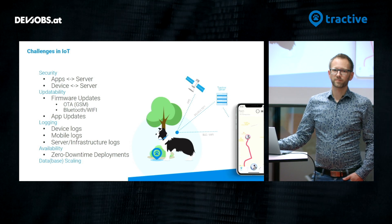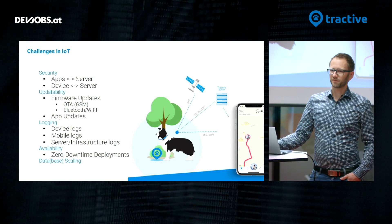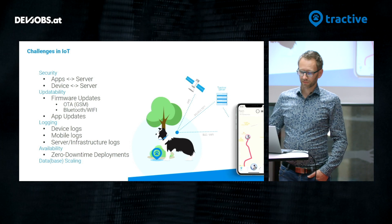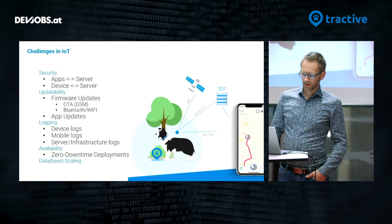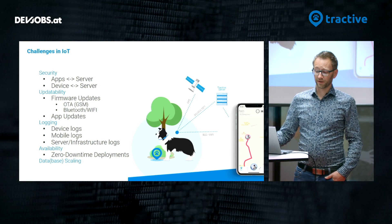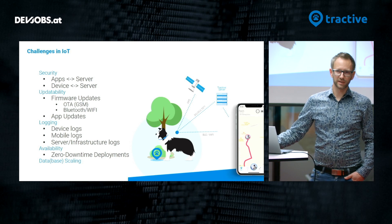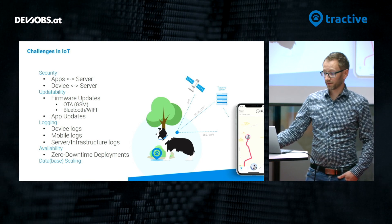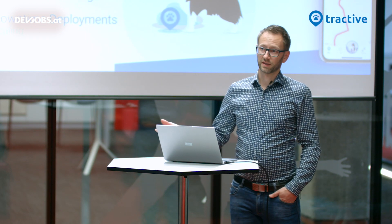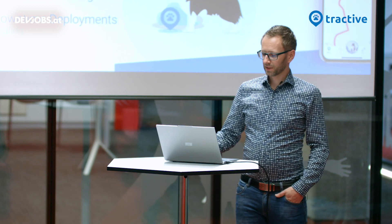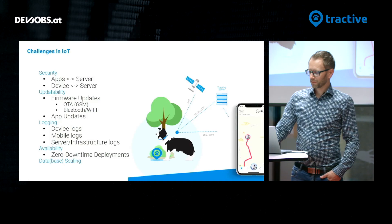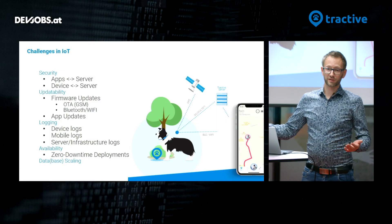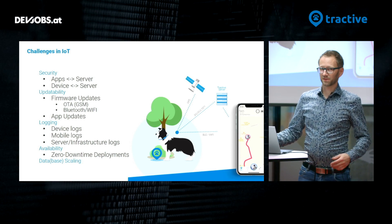Also one of the challenges is logging. Many devices in the field, many requests, and big server farms in the background create lots of logs out of various software systems. There are also challenges when it comes to availability — systems that need to be in the field 24/7. That means we have to take care of zero downtime deployments and make sure our customers around the world always see the latest location of their pets. And with lots of pets and lots of customers, there's lots of data, so scaling the database is another challenge.